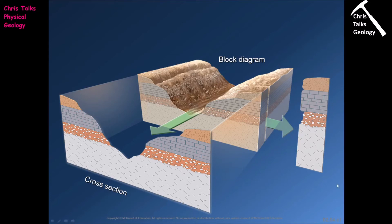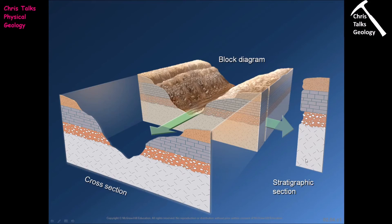The third style of diagram is a stratigraphic section. The key thing to notice is that there is no topography on a stratigraphic section — we don't really care about topography here. The stratigraphic section is primarily there to show us the thickness of layers and the order of the layers. Once we've worked out the relative ages of the layers, we put them into an ordered sequence. The principle of superposition says the oldest layer will be at the bottom and the youngest at the top, and the thicknesses of layers as drawn are consistent with what we would measure at the outcrop.